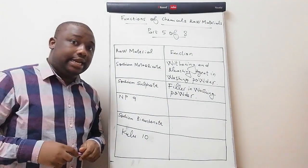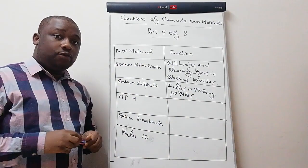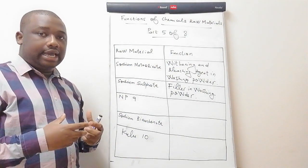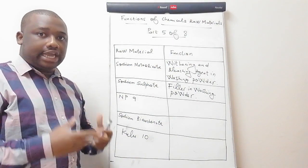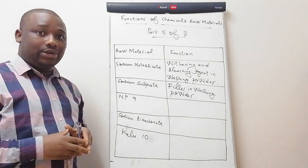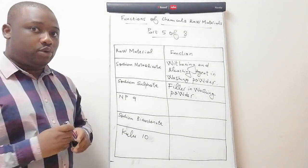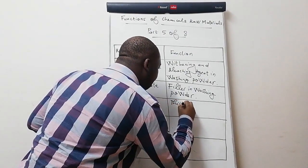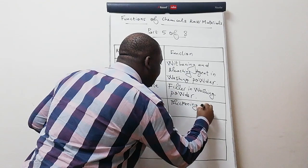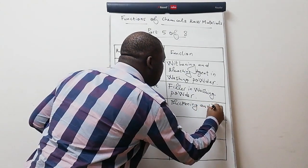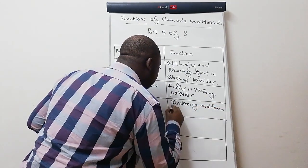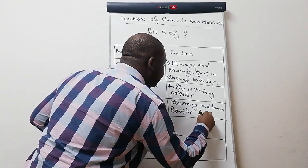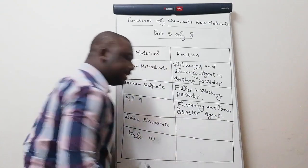The next ingredient is N-Penine. What is N-Penine used for? N-Penine is used as thickening and foam booster agent. Let me write this down. So it's used as thickening and foam booster agent.